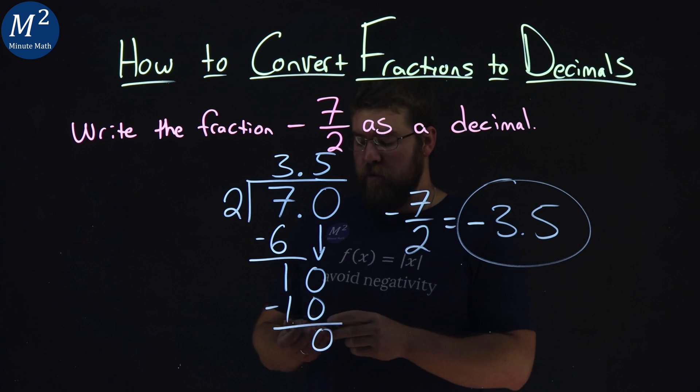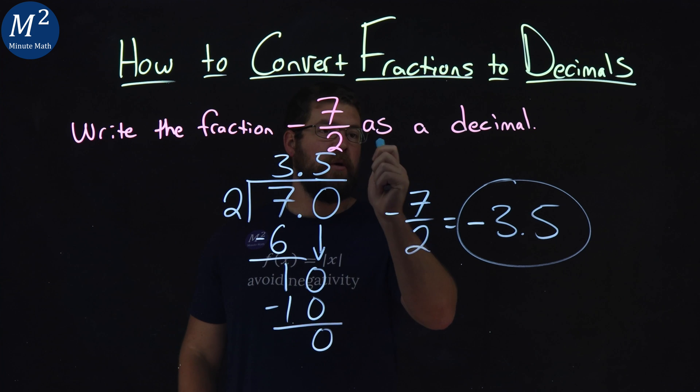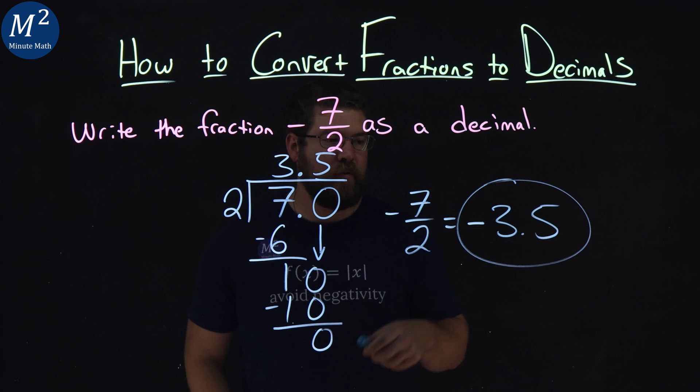And there we have it. We found the fraction, negative 7 halves, and we wrote it as a decimal, and we got negative 3.5.